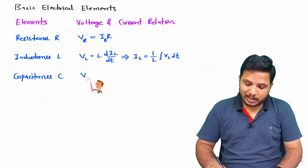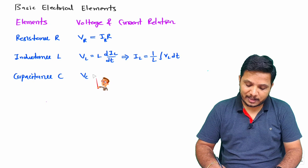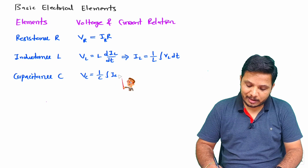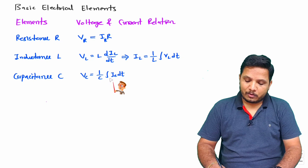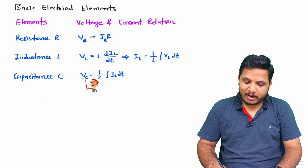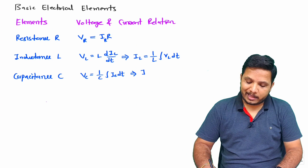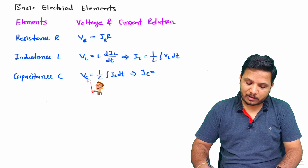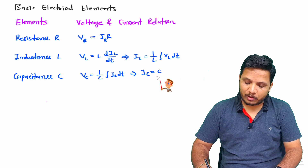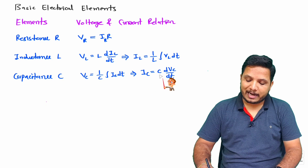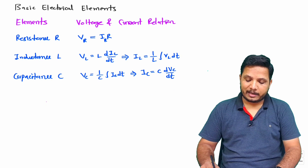For capacitance, the voltage across the capacitor VC equals (1/C) times the integral of IC dt. Based on current, we can find the voltage. If you want the current through the capacitor based on voltage, C moves to the numerator and integration translates to differentiation, giving IC = C times dVC/dt.